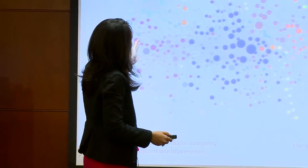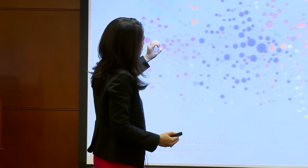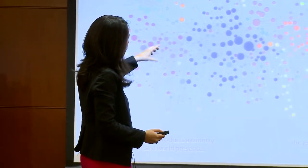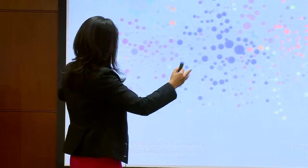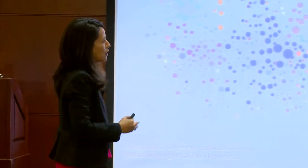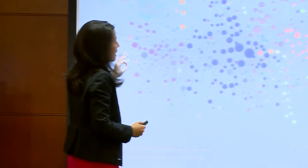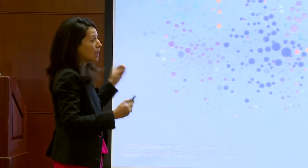This is the product space of Spain. The product space is the same for every country, but it's Spain because the products that Spain produces with strength are colored in bright colors. The analogy Ricardo uses, which is really powerful, is to think of this as a forest where every node is a tree and every firm is a monkey.